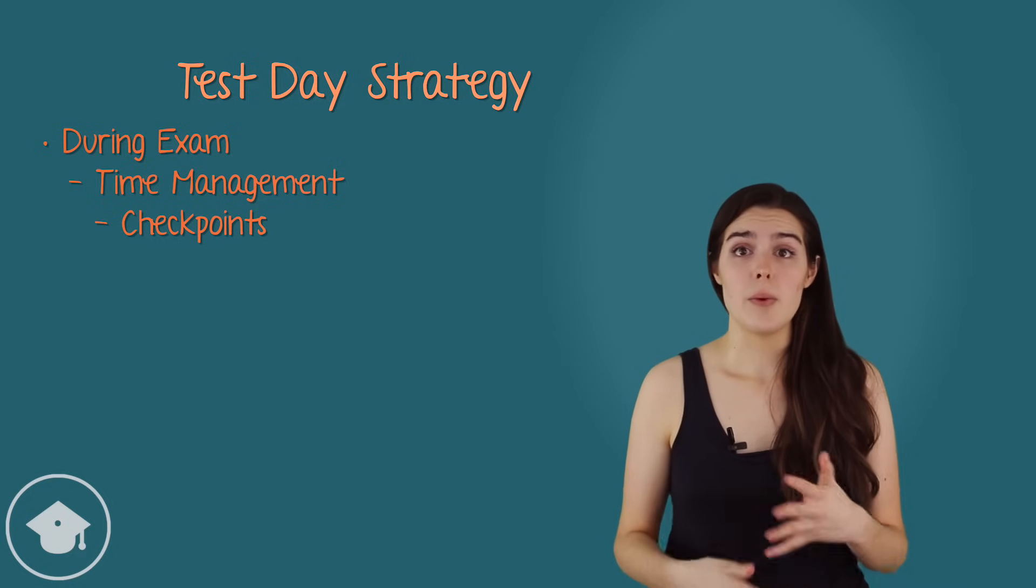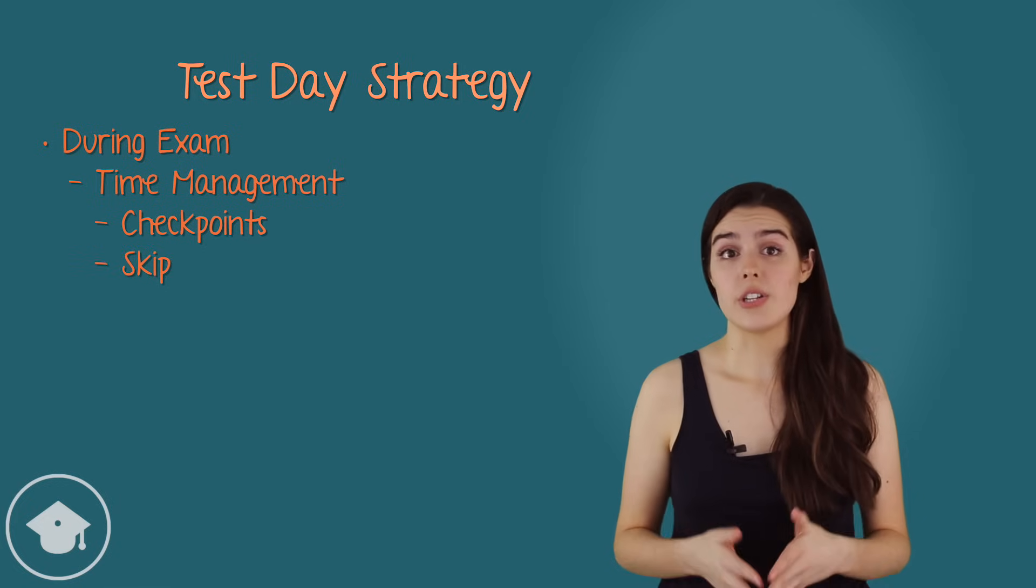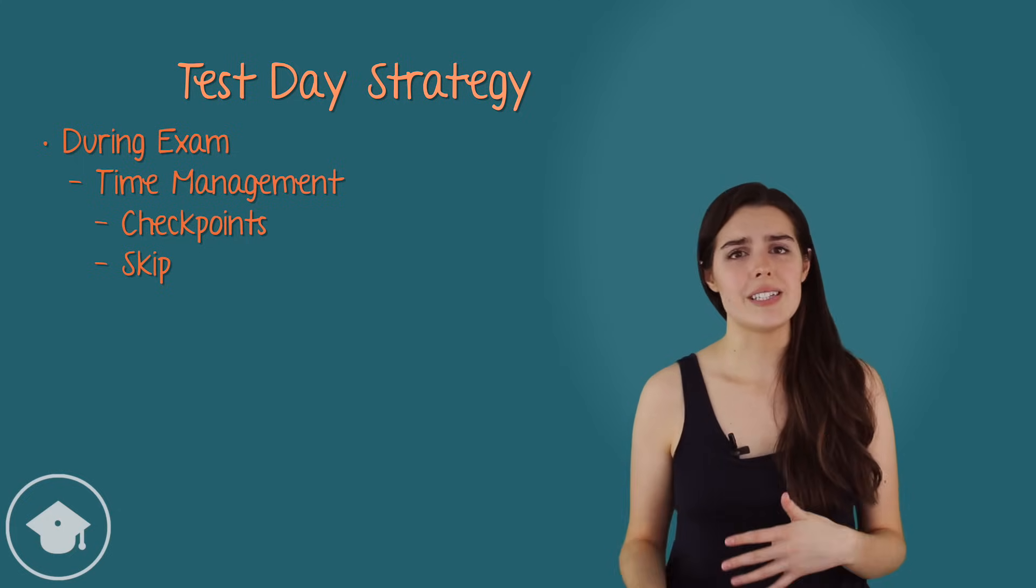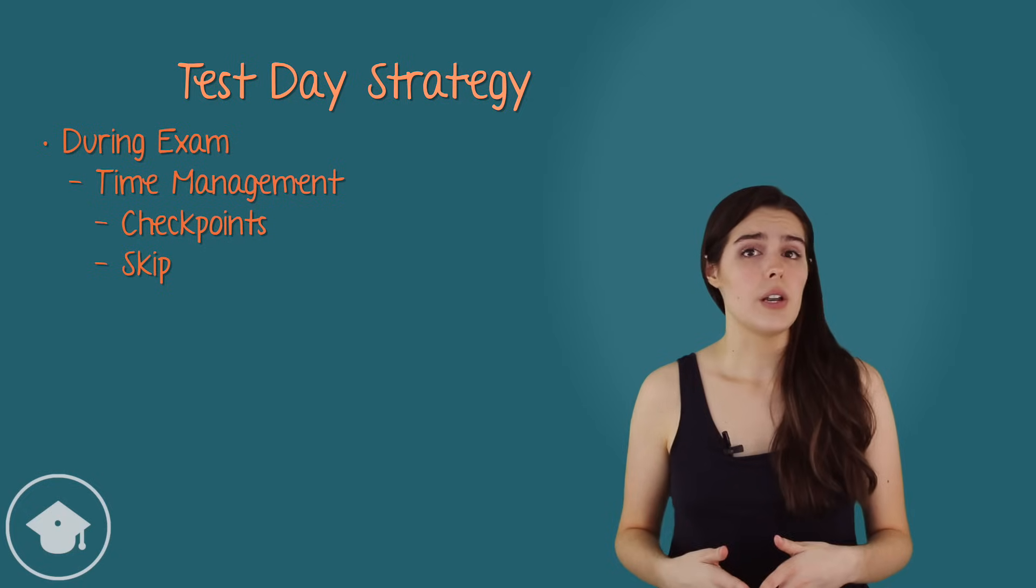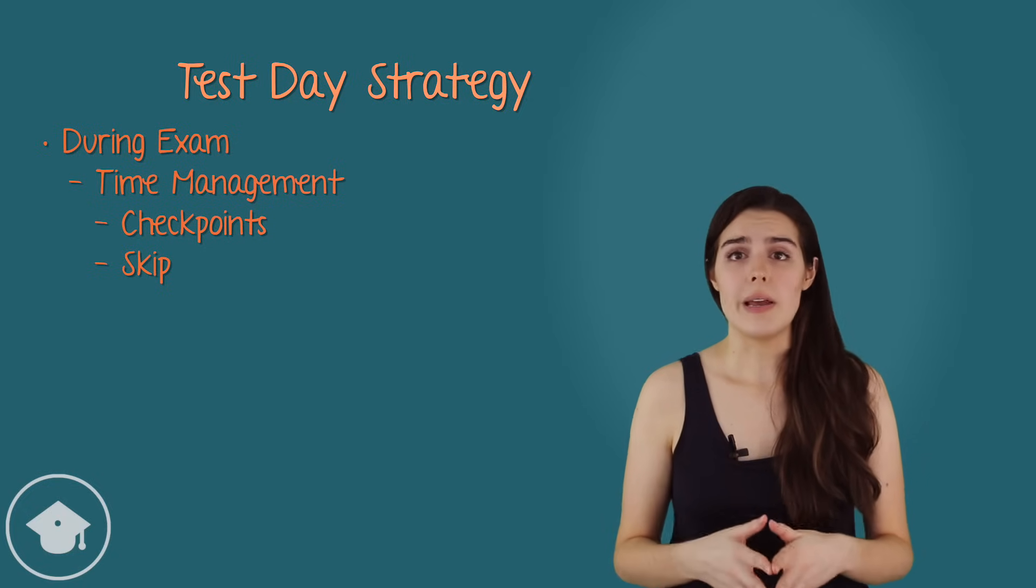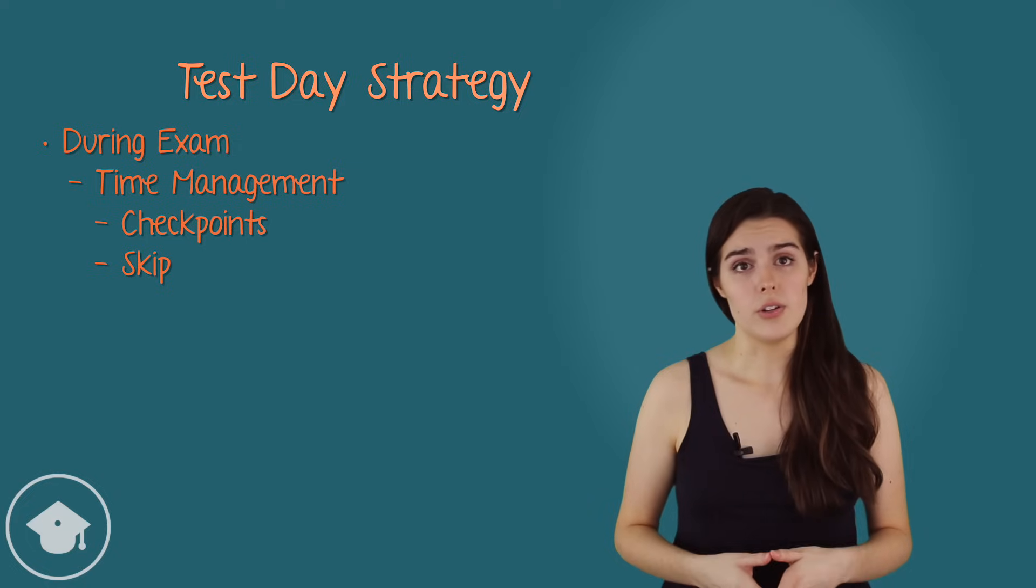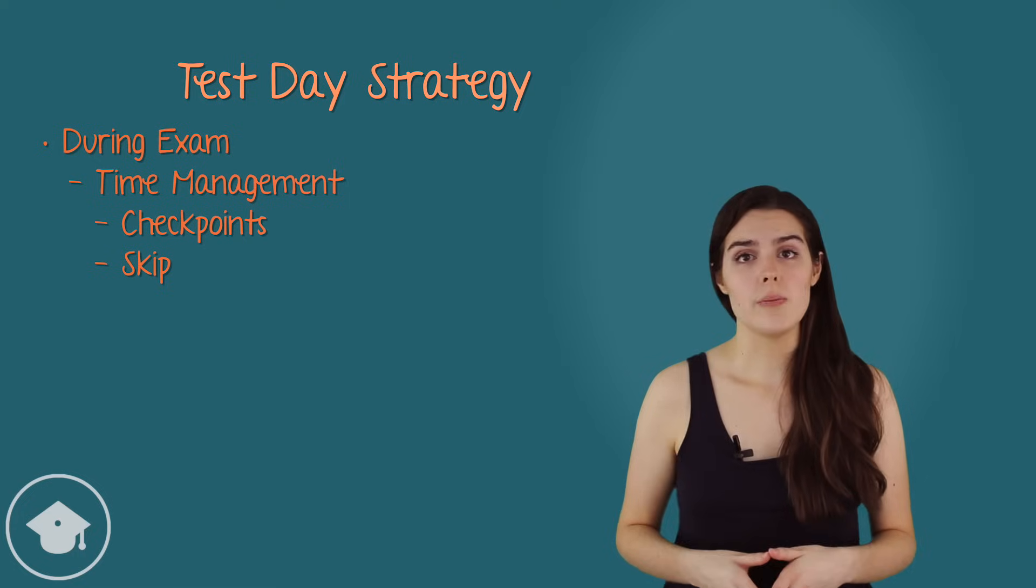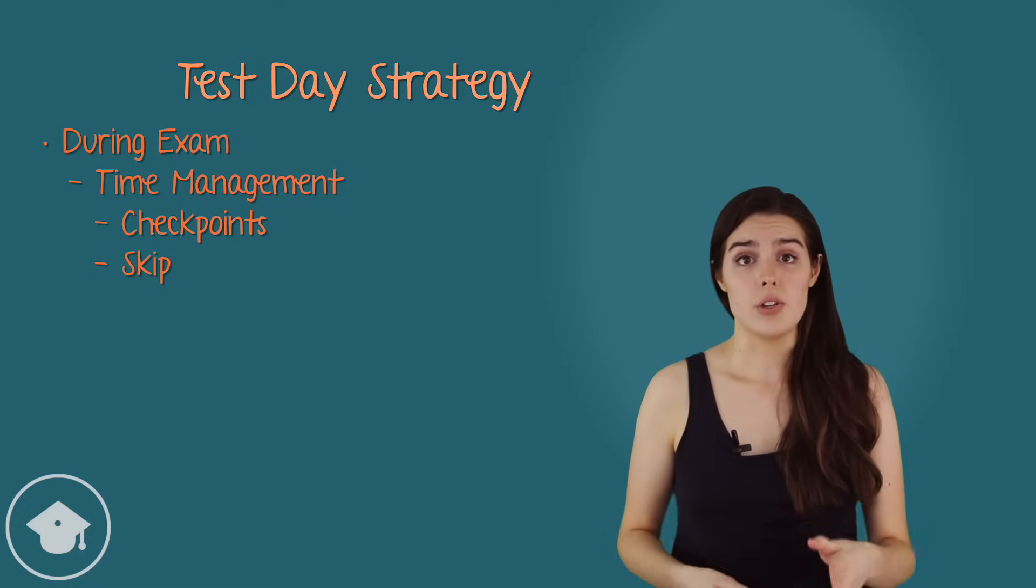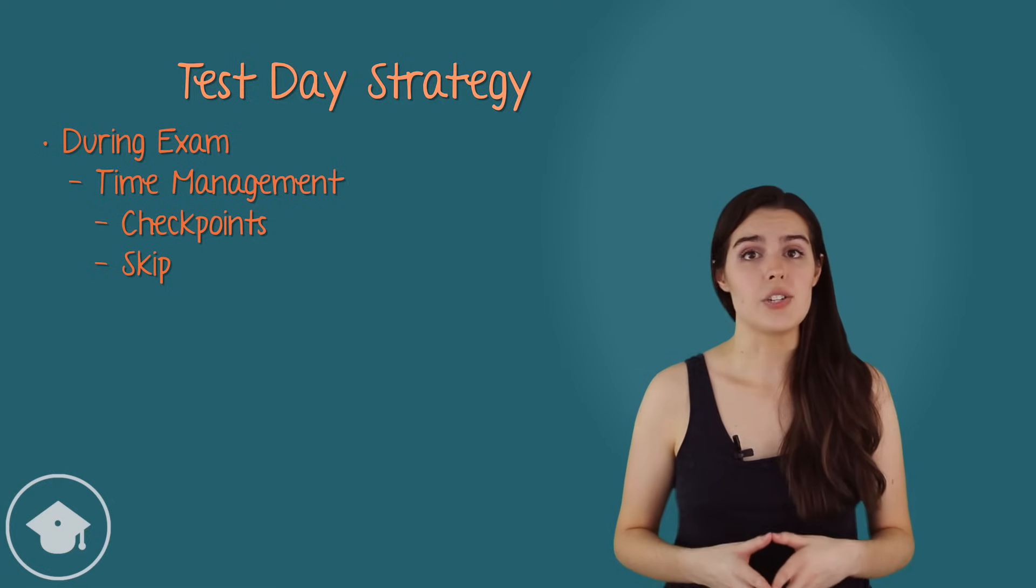Now, second, remember that because the test is section adaptive, we can skip around within a single section. This means that if a problem is eating up too much time or causing you to stress out and spin your wheels, your best move is to flag it and come back to it once you've at least gotten through the remaining problems. Now, the problems you decide to skip will be largely personal since every test taker is different. A good way to determine which problems to skip is to use the 30-second rule, which we discuss in more detail in our GRE verbal time management video.